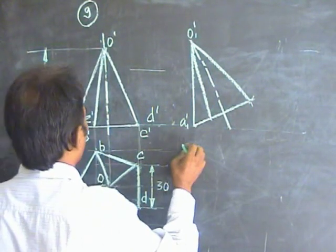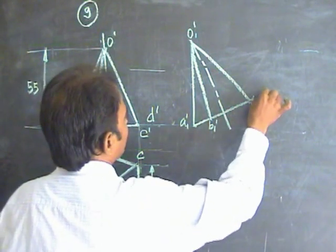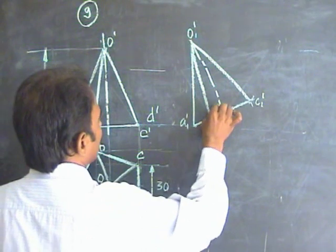You can draw the naming also. This is B1 dash, C1 dash, then D1 dash.